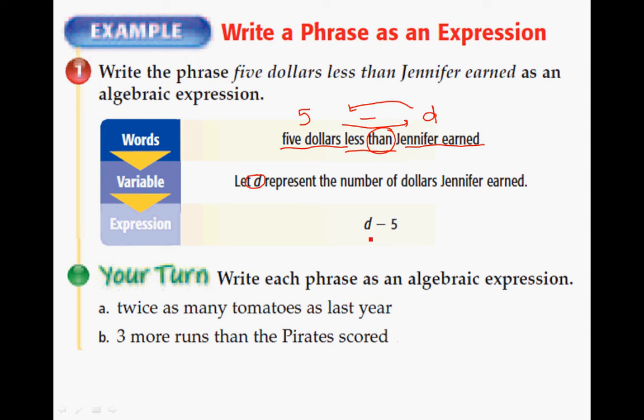Because it's $5 less than D. You have to take $5 away from what Jennifer earned. So take a look at the your turn. Write each phrase as an algebraic expression. Twice as many tomatoes as last year and three more runs than the Pirates scored. Go ahead and pause this, answer those two questions, and then restart the video so you can see the answers.